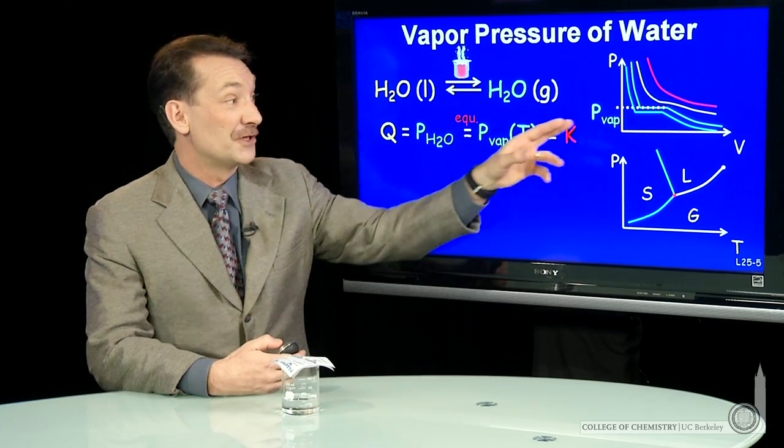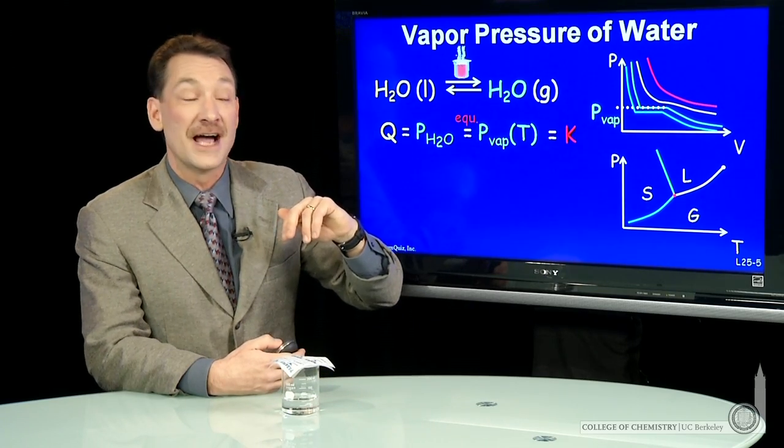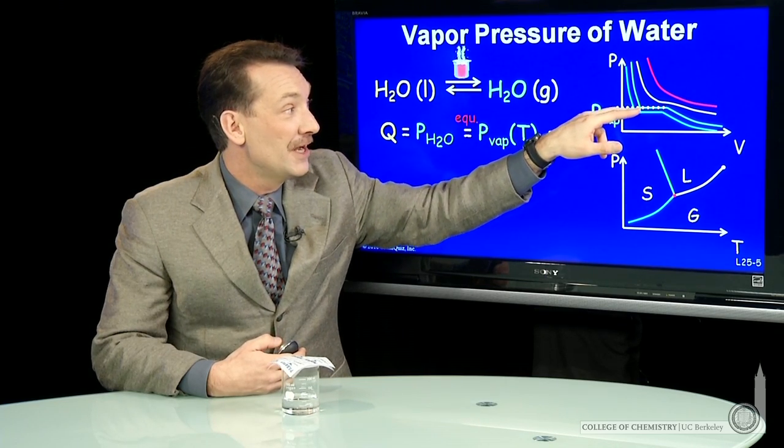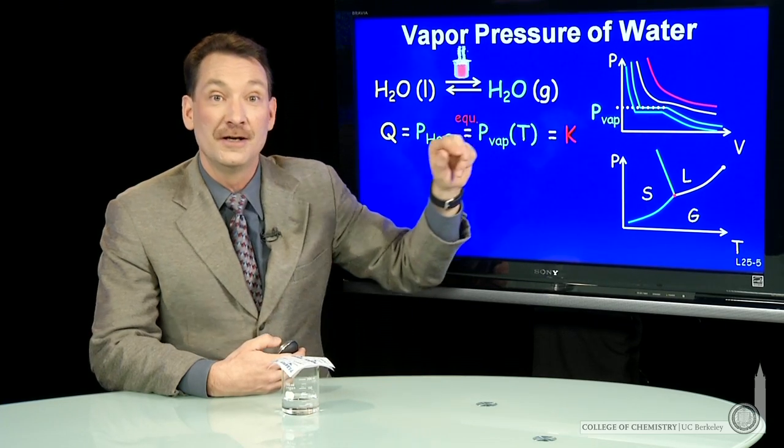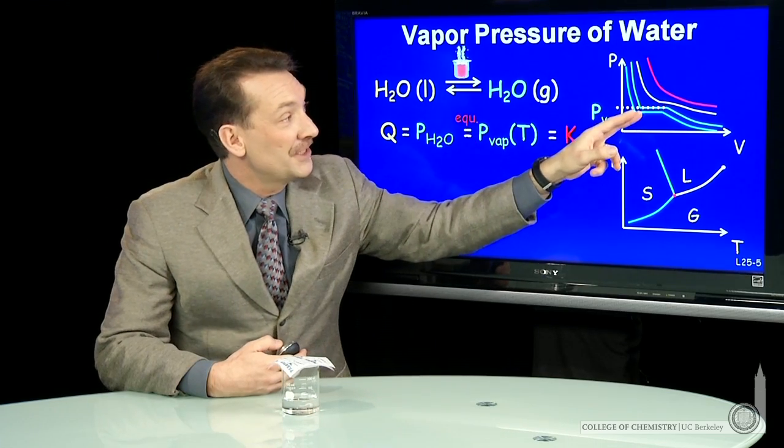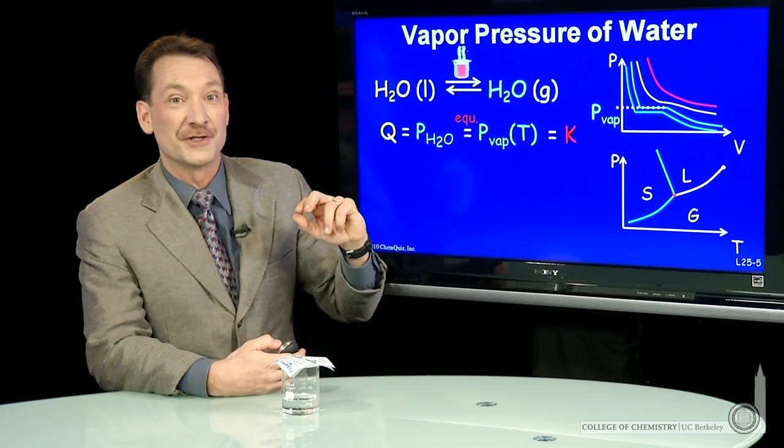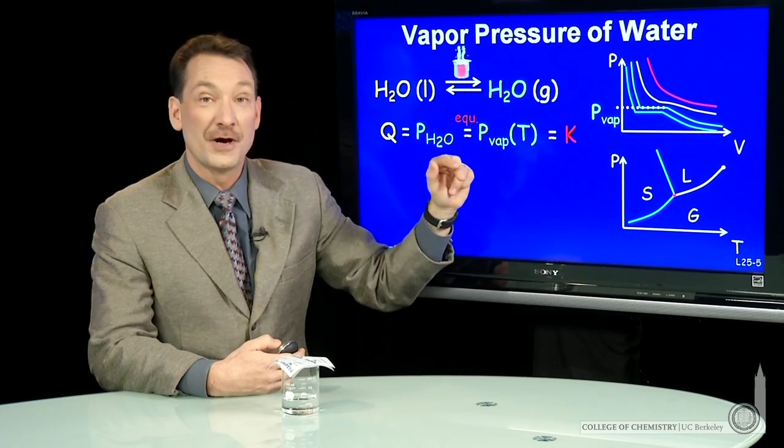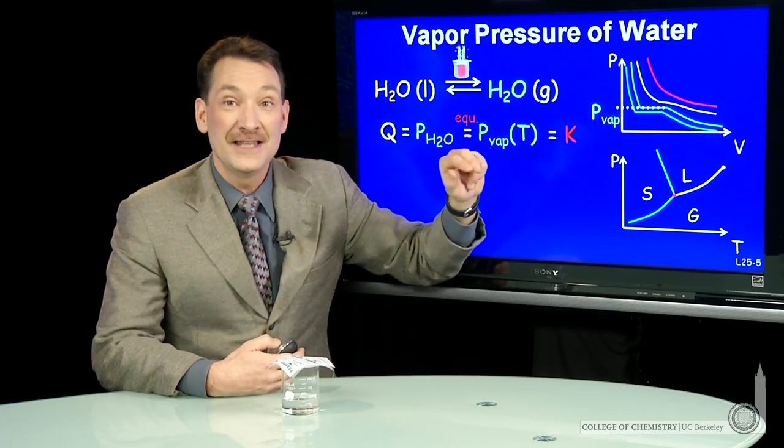And we could find those equilibrium vapor pressures. You could look at a PV diagram, and you could say, well, at a specific temperature, that's the vapor pressure of gaseous water. Notice here I've plotted several different temperatures for this gas. So as the temperature increases, the vapor pressure increases. And you can see that.